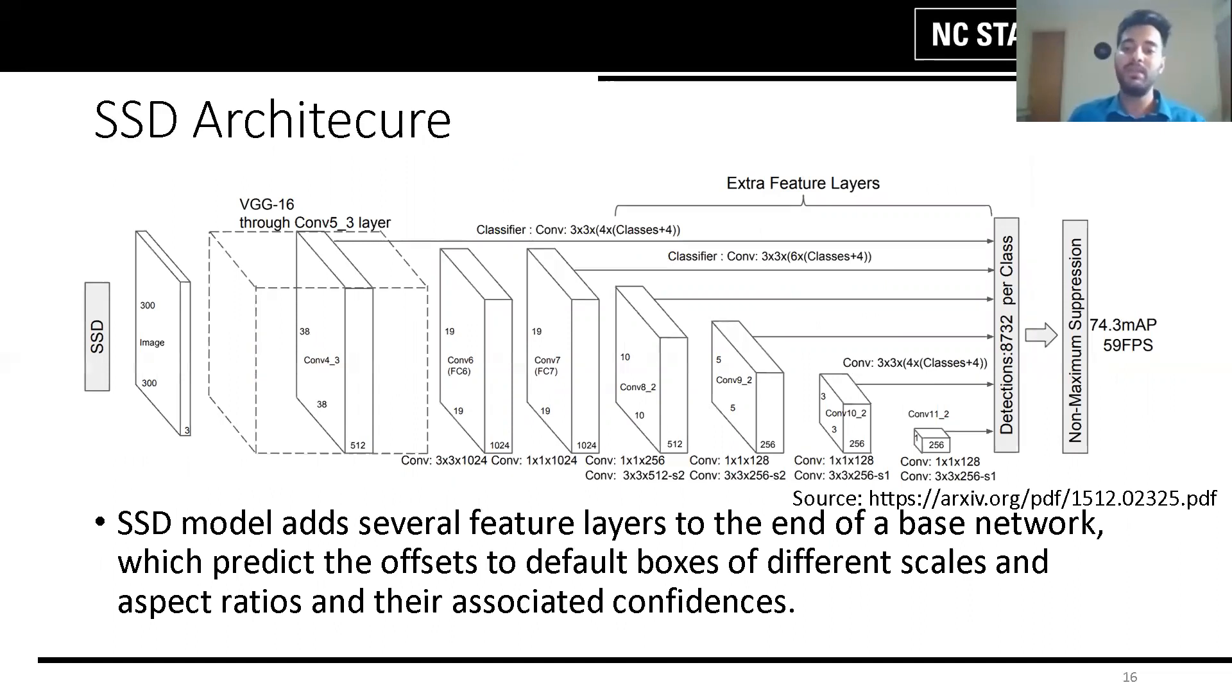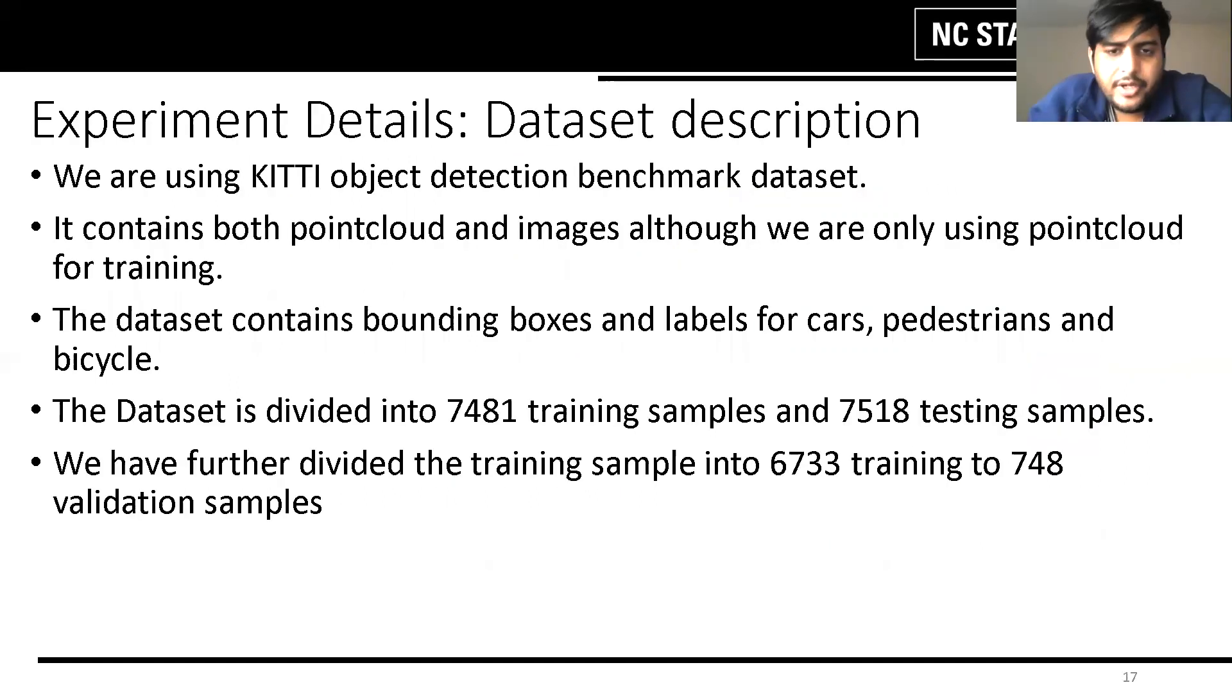Now the details of the experiment will be explained by Abhishek. Here we are using the KITI dataset which consists of 15,000 samples divided into 7,500 training and 7,500 testing samples. We further break the training sample into 6,733 training and 748 validation sample points.